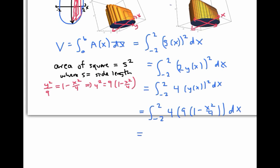I'll pull out the 4 times 9, that's 36, and integrate. Plugging in values and simplifying, we get a final answer of 96.